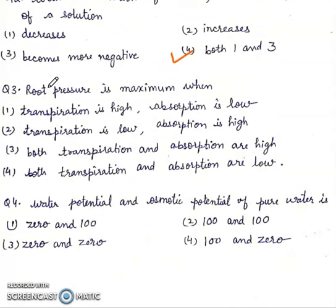Question 3: Root pressure is maximum when? First, transpiration is high, absorption is low. Second, transpiration is low, absorption is high. Third, both transpiration and absorption are high. Fourth, both transpiration and absorption are low. Right answer will be second, transpiration is low, absorption is high.